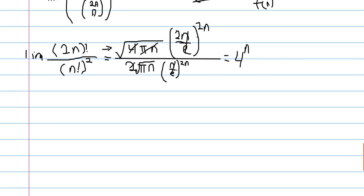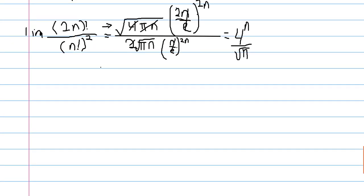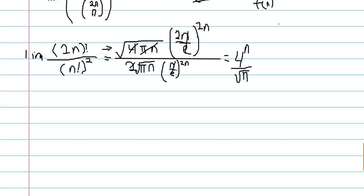And for our intents, since pi isn't really dependent on n, we can just disregard that pi, and we're left with 4 to the n divided by the square root of n. And that is what 2n choose n limits to.